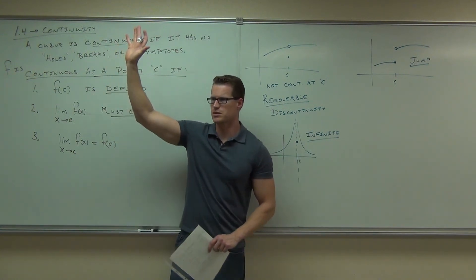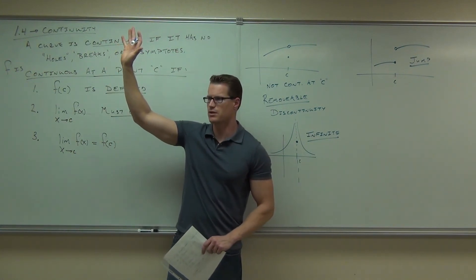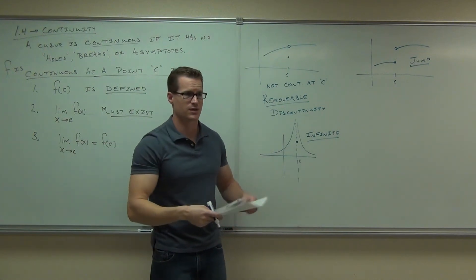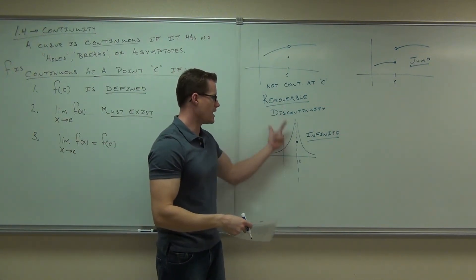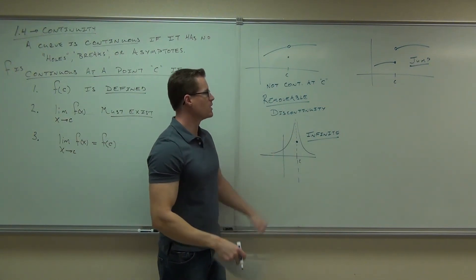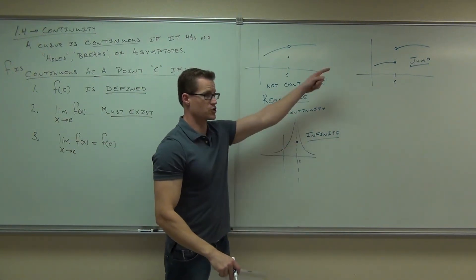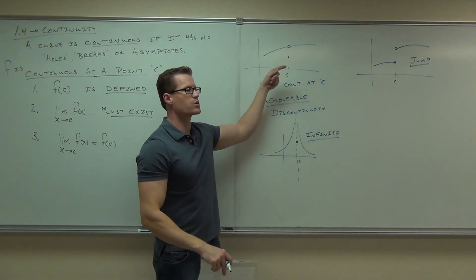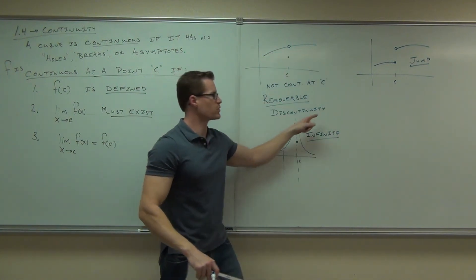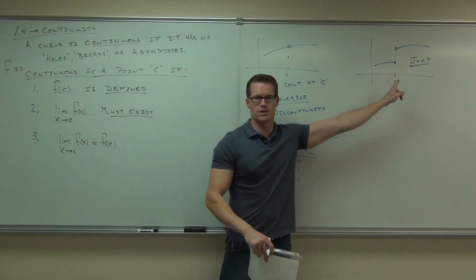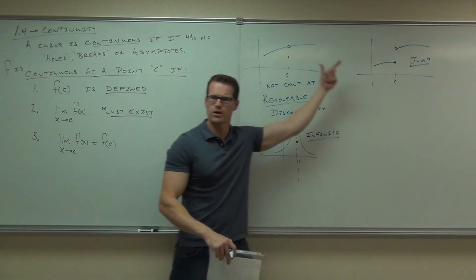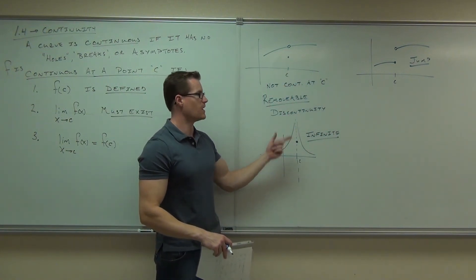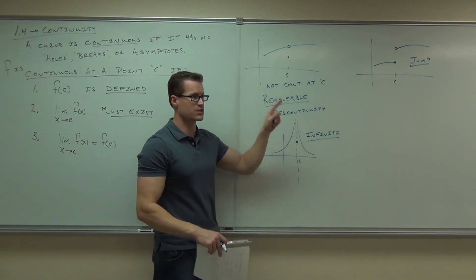So basically we have three different kinds of discontinuities: those that have asymptotes, those that are jumps, and those that are holes. We mostly deal with these two. Jump discontinuities are like piecewise functions, and we mostly deal with rational functions — holes and asymptotes — over here.